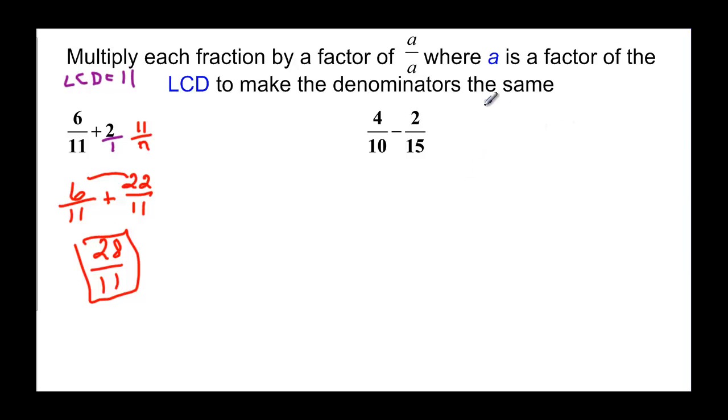And then finally over here, 10 and 15, you could list them all out or you could think about this is 10, 20, 30. 15 goes into 30. So the least common denominator must be 30. So I need to multiply the first fraction by 3 on the bottom so the top has to be multiplied by 3, 2. And that gives me 12 over 30. And then 15 times 2 would give me 30. So I have to multiply by 2 over 2. 2 times 2 is 4 over my 30. And now remember this time we're going to subtract. So 12 minus 4 is going to give us 8 over 30. They're both even so we know that they're divisible by 2. So that's going to be 4 over 15.